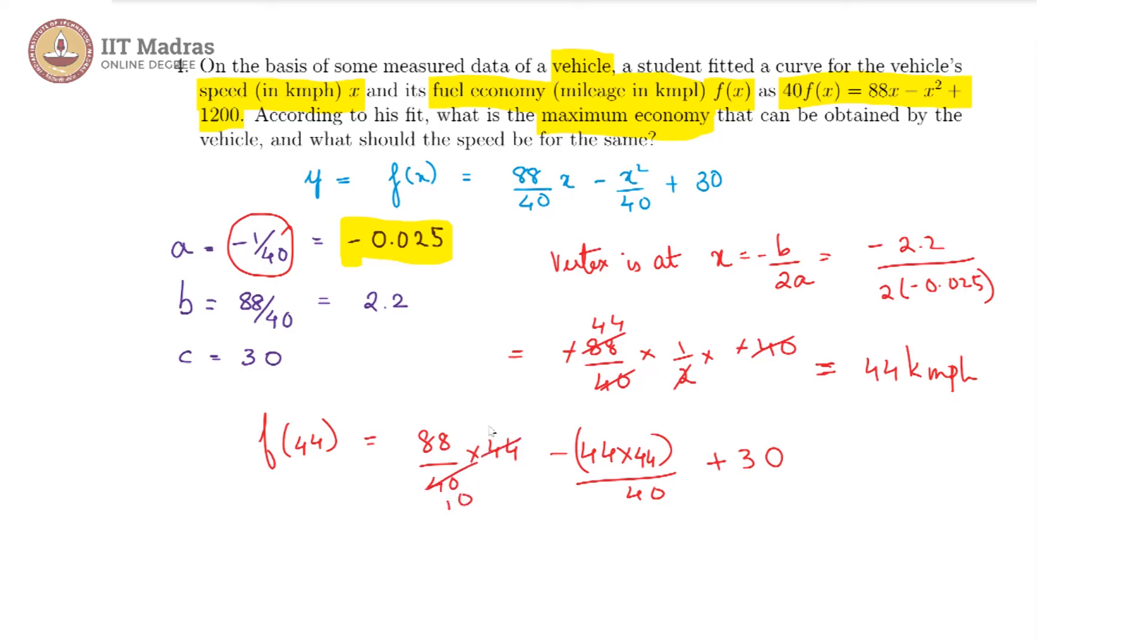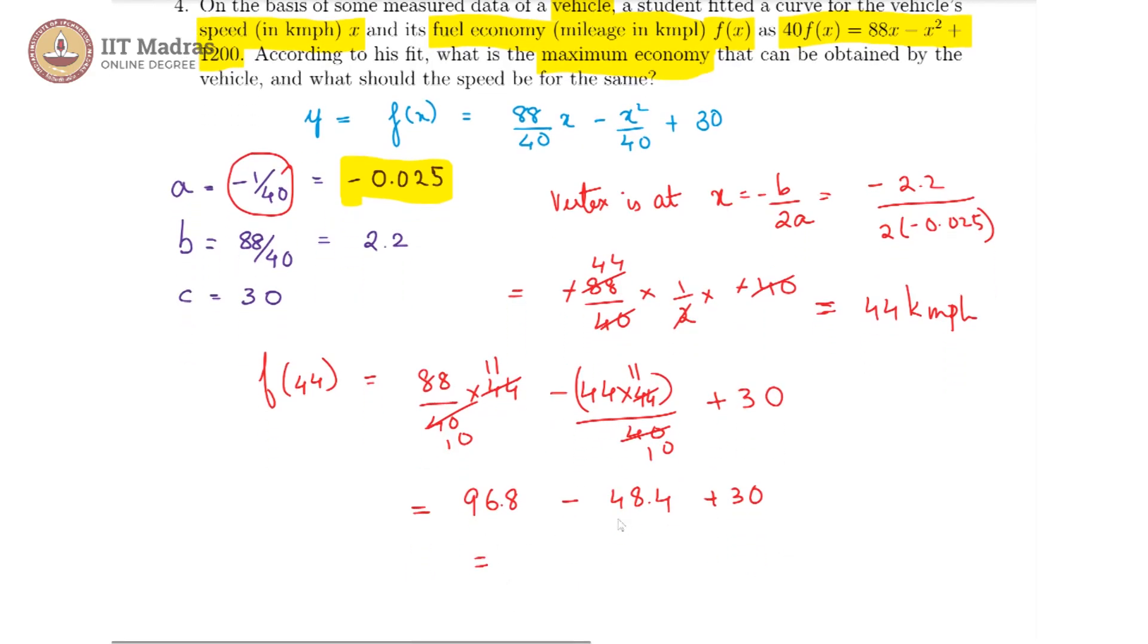This is 4 tens and 4 elevens. This is also 4 tens and 4 elevens. And we get 96.8 minus 48.4 plus 30 which is then further equal to, 96.8 is 2 times 48.4, so you will get 48.4 plus 30 giving us 78.4 kilometer per liter.